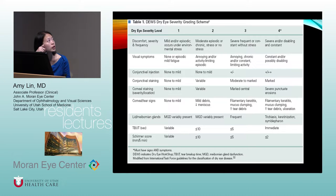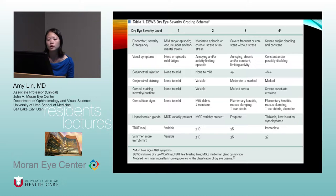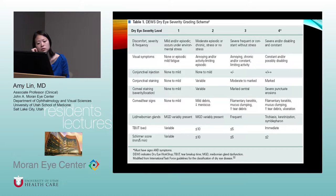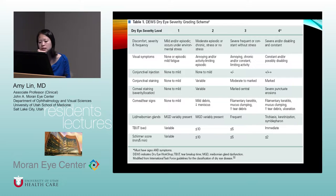The Dry Eye Workshop has a severity grading scheme from 1 to 4. Grade 1 is mild dry eye with possible absence of clinical signs, all the way up to grade 4 with severe, constant debilitating symptoms and very marked clinical signs — covering the whole spectrum of the disease.